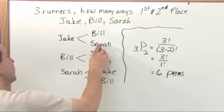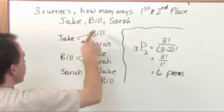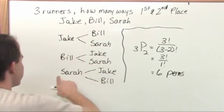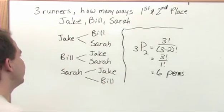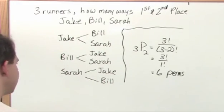And this is exactly what you have, one, two, in this case this would be one permutation, two, three, four, five, six, there's six different ways in which you can have first and second place like that.